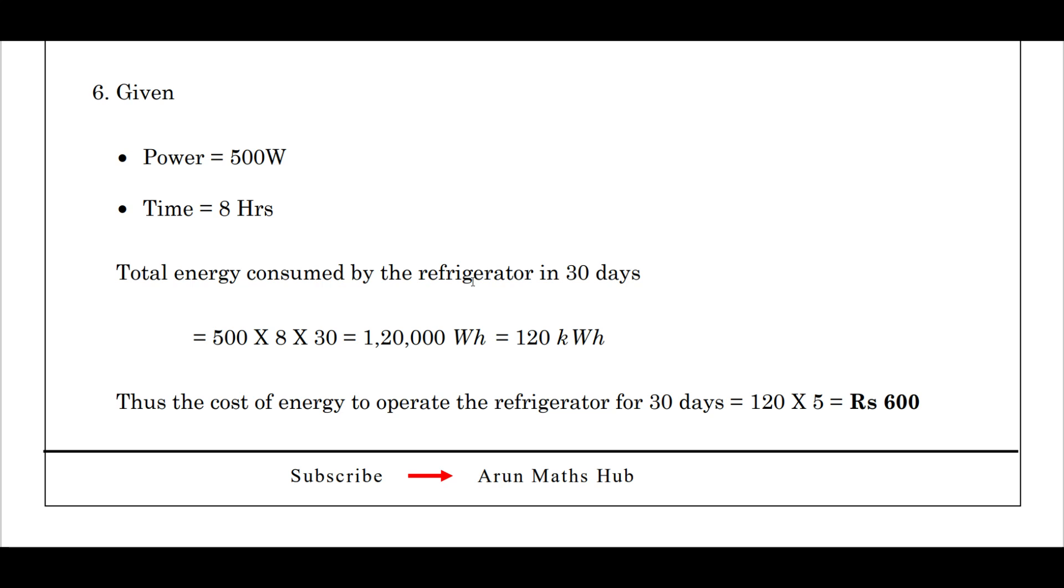Problem from the unit electricity: an electric refrigerator rated 500 watts operates 8 hours a day. What is the cost of the energy to operate it for 30 days at rupees 5 per kilowatt per hour? See, students, they have given power equals 500 watts, time equals 8 hours. Total energy consumed is what? 500 into 8 into 30, we get 1,20,000 watts per hour. Converting it to kilowatt, divided by thousand, we get 120 kilowatt per hour. Now multiply 120 into 5, we get rupees 600.